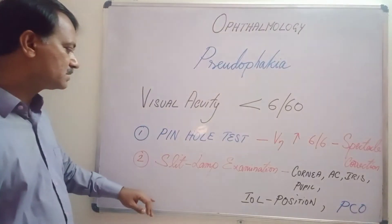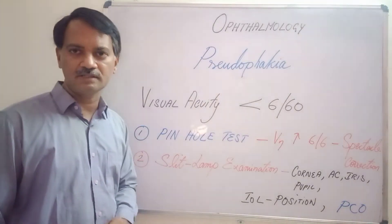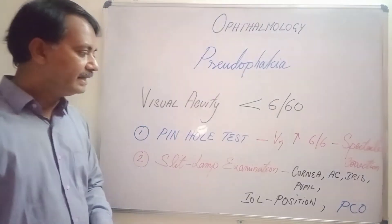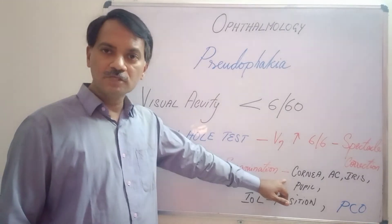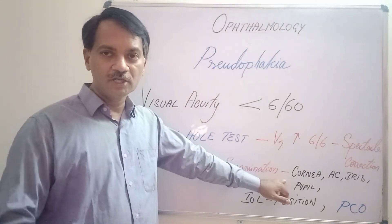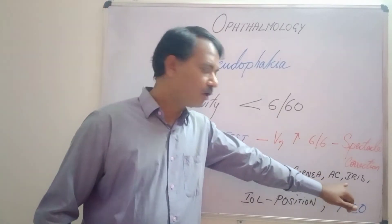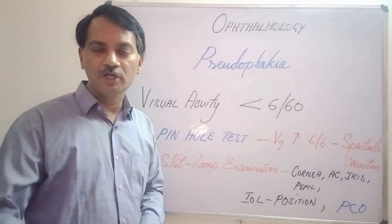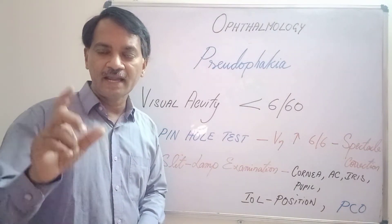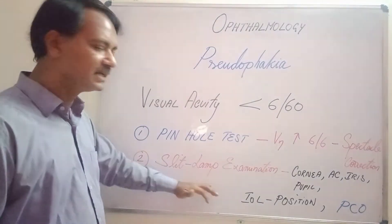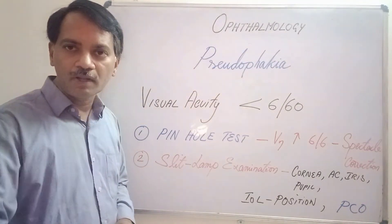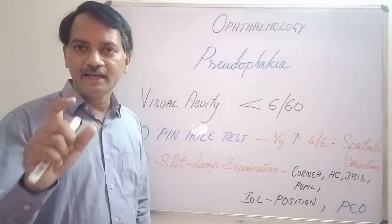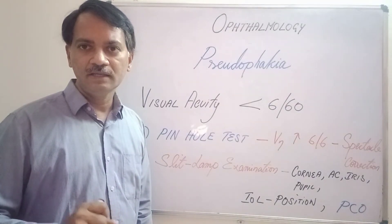The next step is to do a slit lamp examination of the patient. Slit lamp examination is done to find out any minor problems in the cornea, anterior chamber, iris, or pupil which cannot be appreciated with routine oblique examination. If you find any problems in any one of these structures, that may be the reason for decreased vision following cataract surgery.